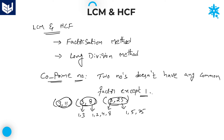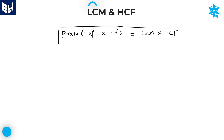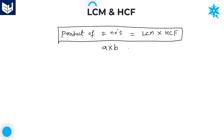One more concept: the product of two numbers is equal to LCM multiplied by HCF. So A × B = LCM × HCF. This is used when two numbers' LCM and HCF are given and one of the two numbers is known — we need to find the second number. If you know any three of the four variables, finding the fourth is straightforward.